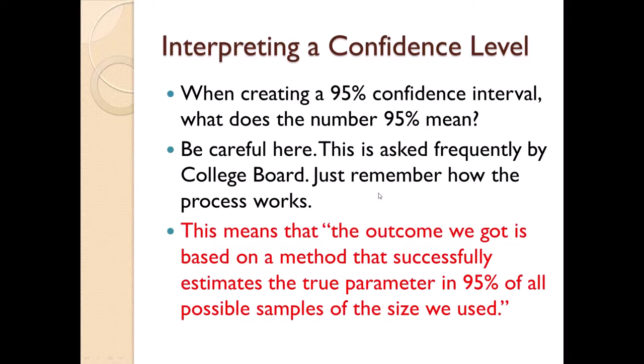Because that sample result, that one sample result, either did trap the correct parameter that you're looking for, or it didn't. It's not like that interval worked today and won't work tomorrow. It's either successful or it's not. So just what does the 95% mean? Remember what a confidence interval does. It estimates a true population parameter from a sample. And it gives you a range of values that you hope the true parameter is in.